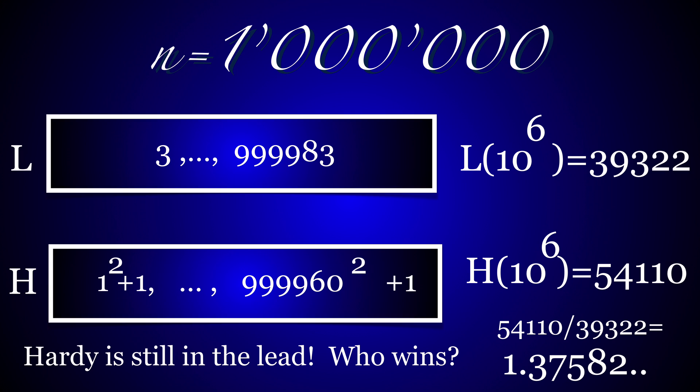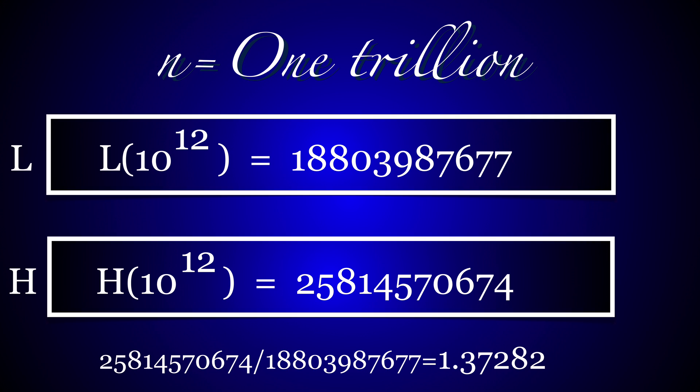The ratio H10/L10 is 2.5. For n=1 million, there are 39,322 Littlewood primes and 54,110 Hardy primes. The ratio is 1.375. For n=1 trillion, there are about 19 billion Littlewood primes and 16 billion Hardy primes. The ratio has not changed, 1.3728.